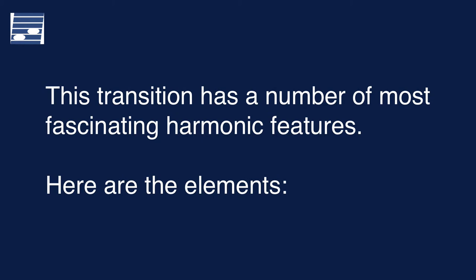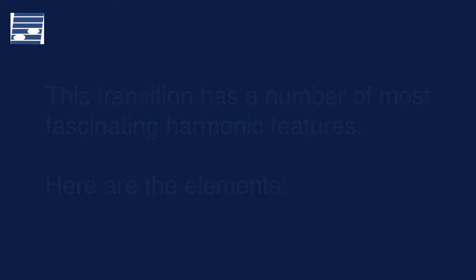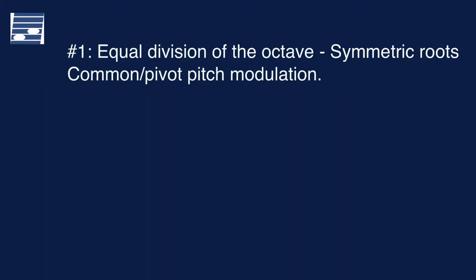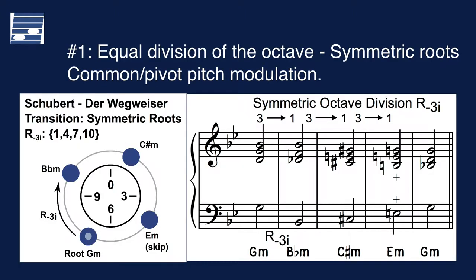Everything sounds natural and smoothly connected, but there are fascinating things happening harmonically that we will now discuss in detail. Here are the musical elements used in this transition. In just eleven measures, Schubert is moving through four minor keys, using symmetric division of the octave.